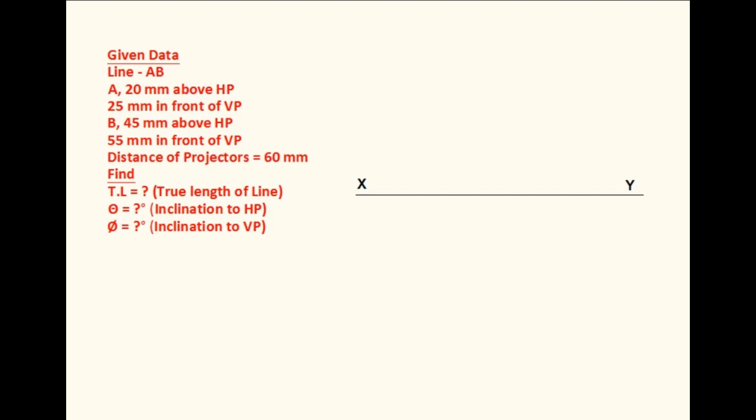Let us see the detail drawing procedure. Draw an XY line. Mark elevation of endpoint A of the line, 20mm above the XY line because A is 20mm above HP, and name it as A dash. Mark plan of endpoint A, 25mm below the XY line because endpoint A is 25mm in front of VP, and name that as A.